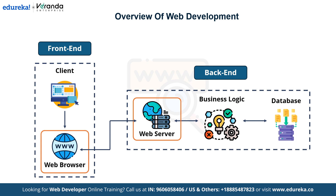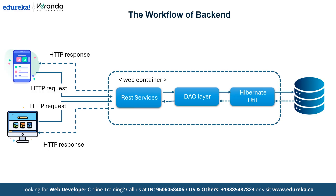Now that we have understood the basic components of web development, let's zoom in on how the backend works. It starts with an HTTP request from the client device such as mobile phones or desktop browsers. This request reaches the web container where processing begins. First, REST services handle the request by determining what action is needed. Then it moves to the DAO layer which interacts with the database efficiently. Hibernate ORM simplifies database operations by mapping data between objects and database tables. Finally, the data flows to and from the database and the result is sent back as an HTTP response to the client device.